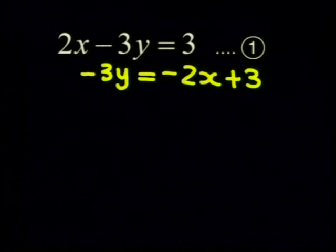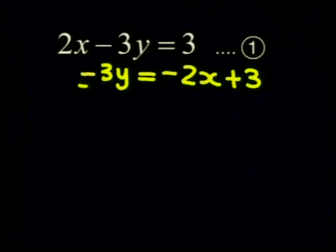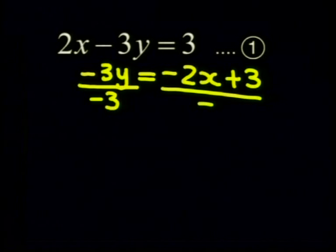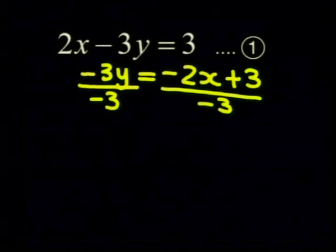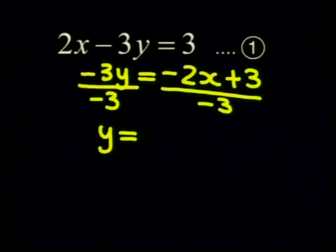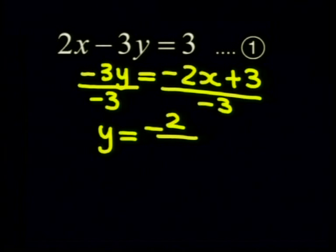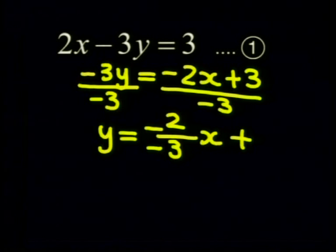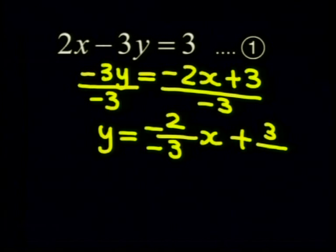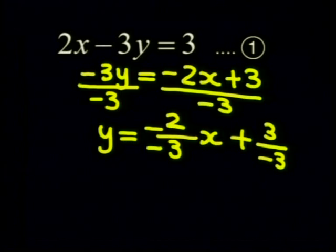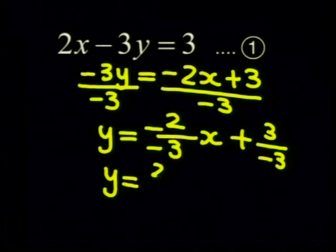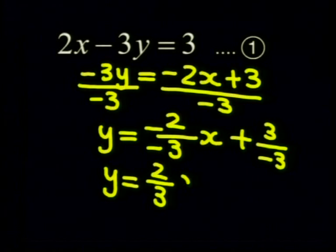Next we divide by negative 3 on both sides. This gives us y is equal to negative 2 divided by negative 3x plus 3 divided by negative 3. This simplifies to y is equal to 2 divided by 3x minus 1.